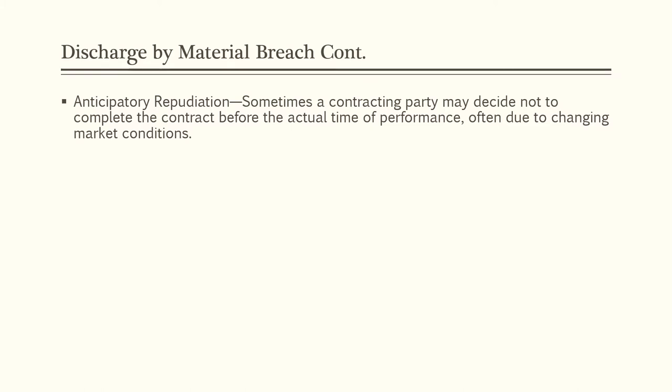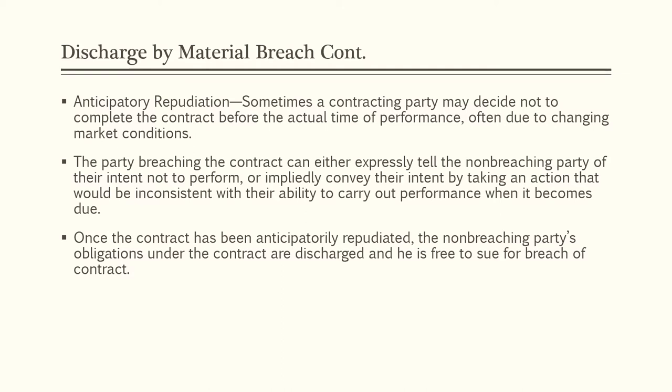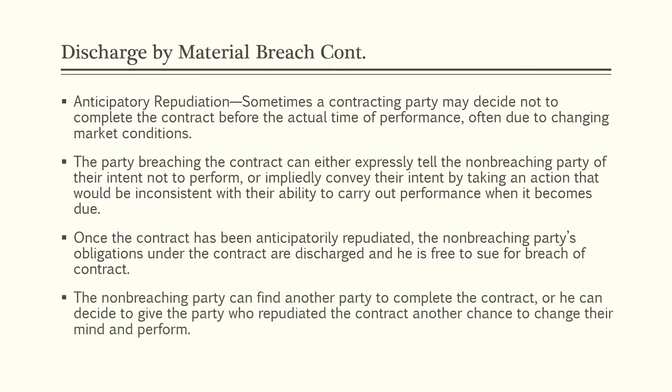Next we'll discuss anticipatory repudiation. Sometimes a contracting party may decide not to complete the contract before the actual time of performance, often due to changing market conditions. The breaching party can either expressly tell the non-breaching party of their intent not to perform, or impliedly convey that intent by taking an action inconsistent with their ability to perform. Once anticipatorily repudiated, the non-breaching party's obligations are discharged and they are free to sue for breach. They can also find another party to complete the contract or give the repudiating party another chance to perform.